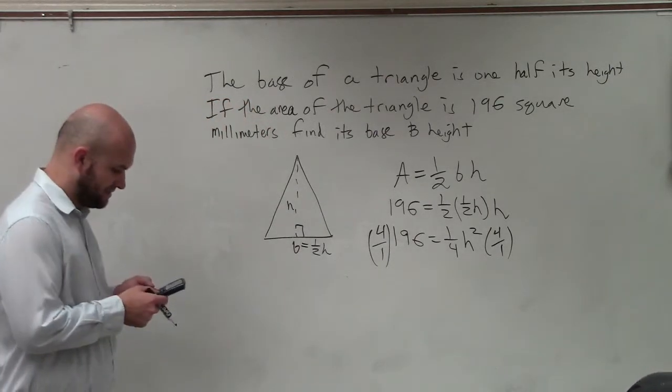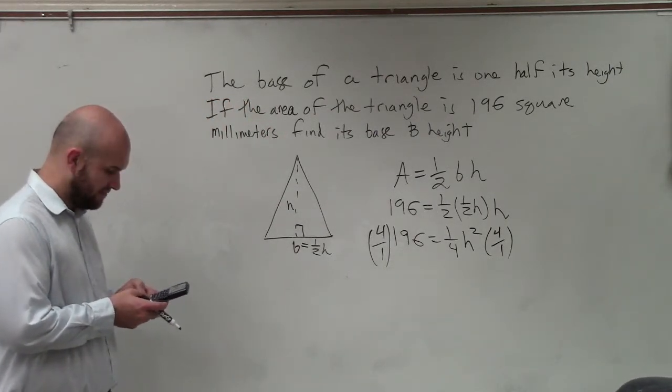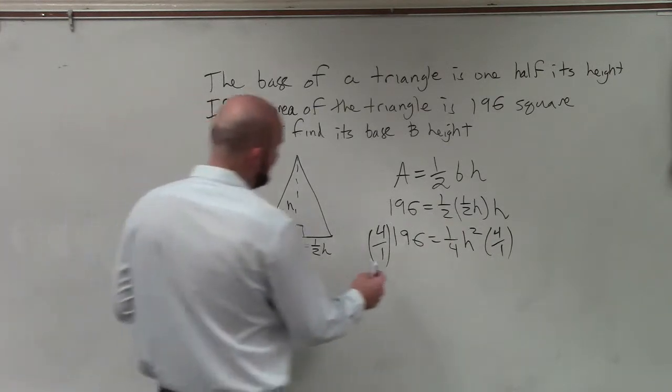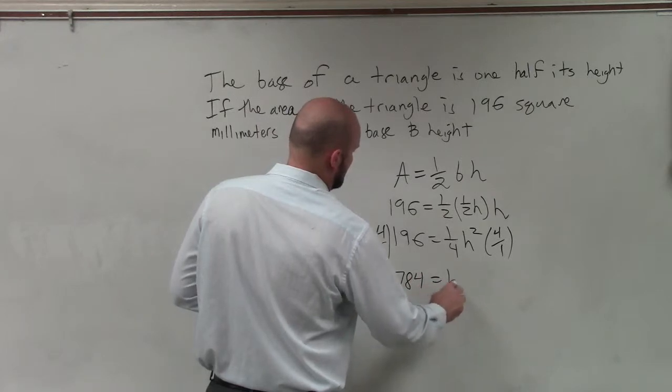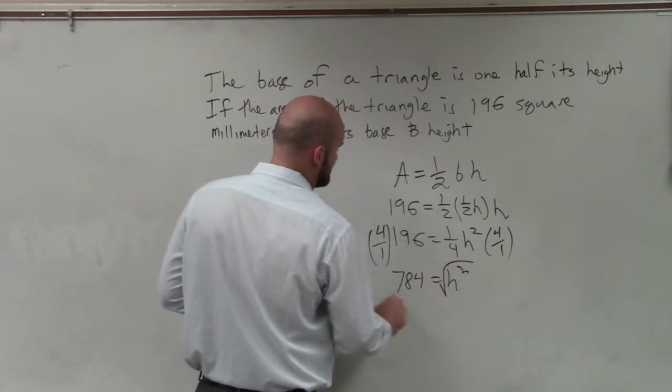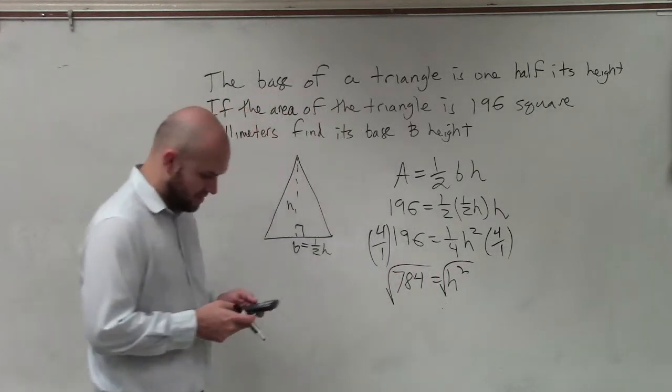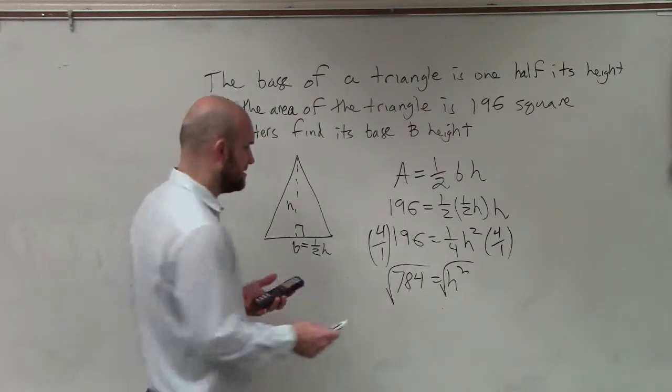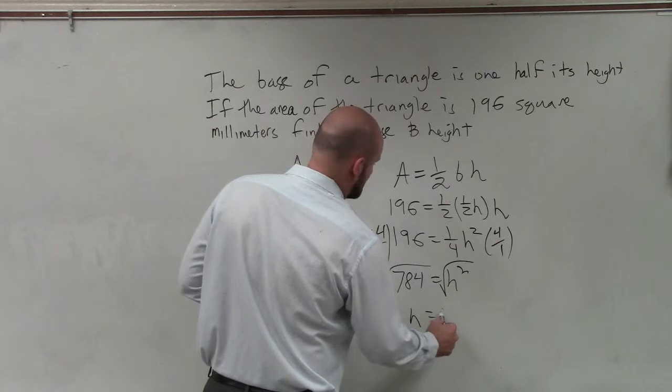So I have 196 times 4 equals 784 equals h squared. Take the square root, take the square root. And that's going to be h equals 28.